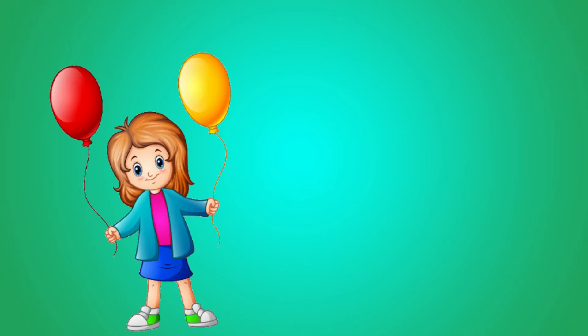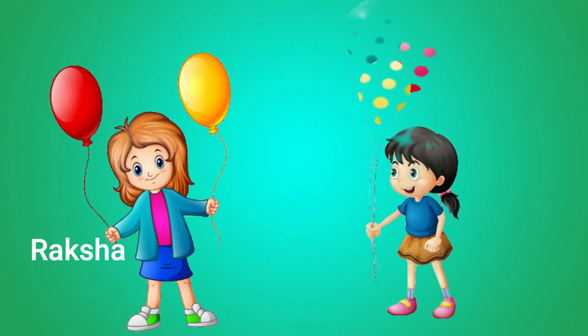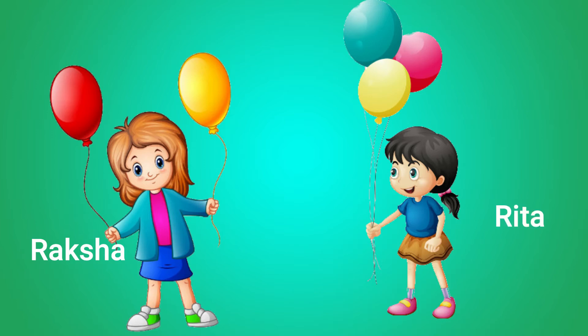Her name is Rooksha. Later her friend came to her — her name is Rita. They wanted to find out who is having more balloons. Do you know, children, who is having more balloons? Yes, Rita is having more balloons and Rooksha is having less balloons. How can I see this?